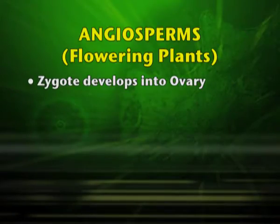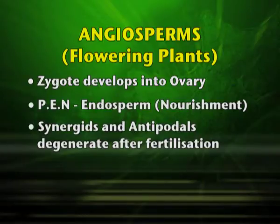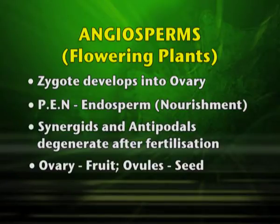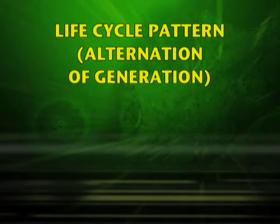The zygote develops into the embryo. The primary endosperm nucleus develops into the endosperm, which is responsible for nourishment. The synergids and antipodal cells degenerate after fertilization. After fertilization, the ovary develops into the fruit and the ovules into the seed. In the life cycle of an angiosperm, the diploid sporophyte alternates with the haploid gametophyte — the sporophyte is the plant body and gametophyte are the gametes. This pattern is referred to as alternation of generation.